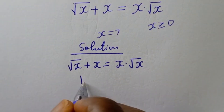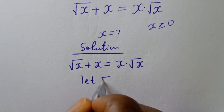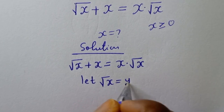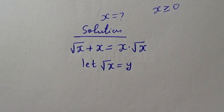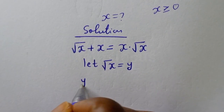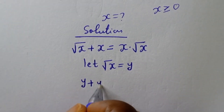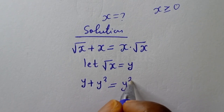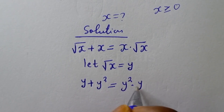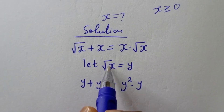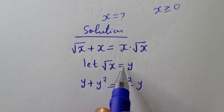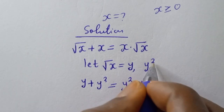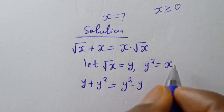Let square root of s equal y. Then the equation becomes y plus y squared is equal to y squared multiplied by y, because if square root of s equals y, then y squared equals s, and therefore x equals y squared.